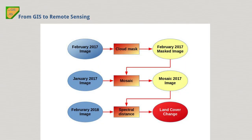Hi, I'm Luca Congedo and you're watching From JS to RemoteSense. This video tutorial is about the use of the semi-automatic classification plugin for QGIS, for calculating the land cover change. In particular, we are going to use Sentinel-2 images for 2017 and 2018, and we are going to perform a cloud mask and a mosaic. This could be useful for assessing the burnt area, forest logging, or for detecting urban changes. Let's get started.